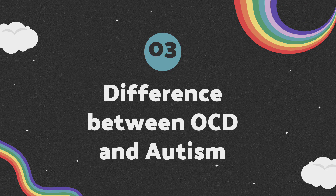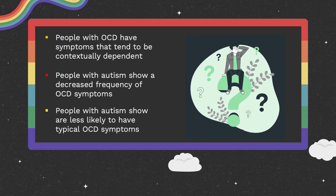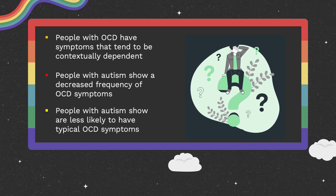OCD and autism are separate disorders that share some characteristics; however, they do have some important differences. Some researchers believe there are fundamental differences between the repetitive and restricted behaviors in both disorders, though there is debate about this. People with autism tend to show a decreased overall frequency of OCD symptoms and symptom severity. They are also less likely to have typical OCD symptoms such as washing, checking, and counting. Researchers attribute these differences to a decreased number of obsessions in people with autism. People with OCD have a much higher tendency to have contextually associated obsessions and compulsions, and many researchers believe that the main difference between the two disorders is the interaction between their symptoms.